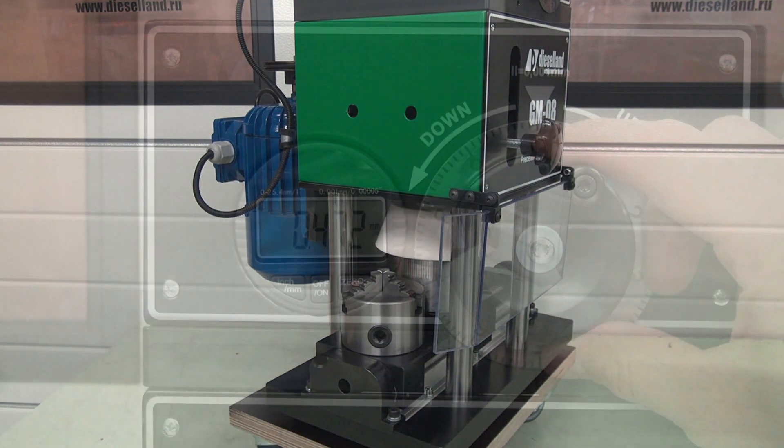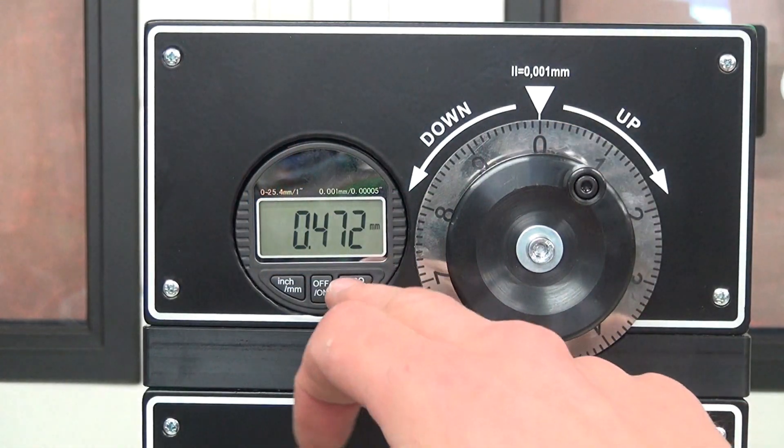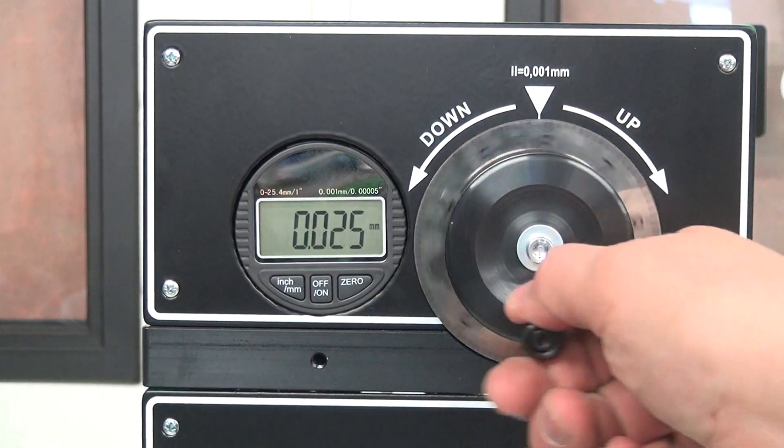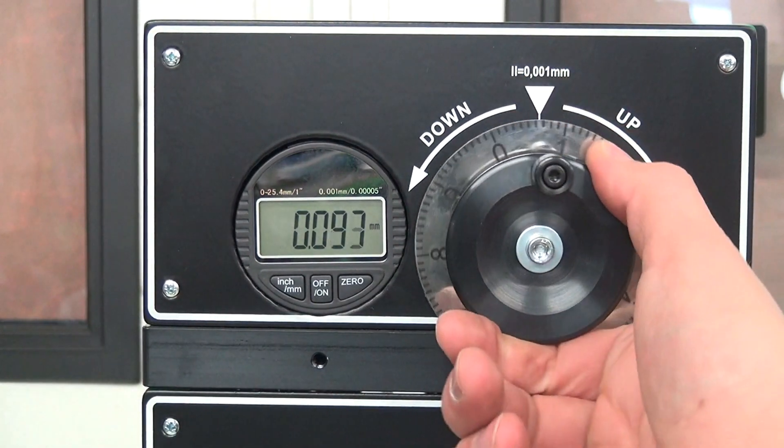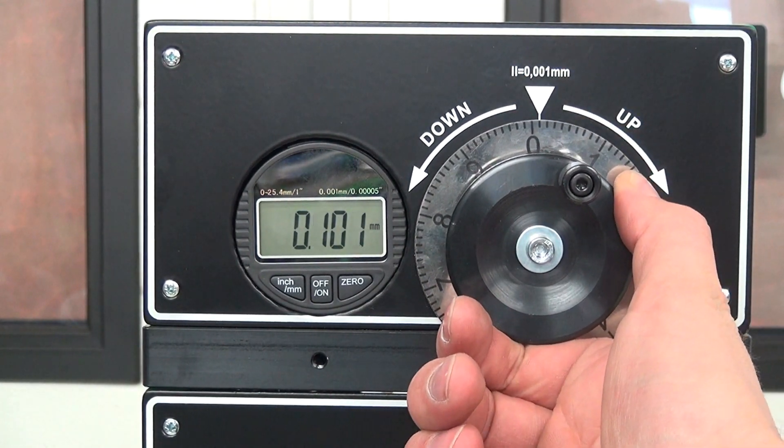Polycarbonate safety screen. Handle for vertical displacement of the motor and drive shaft support with abrasive cup, equipped with a dial provided with 0.001 mm, 1 micron gradations.